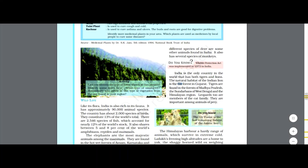Reading from the book: India is the only country in the world that has both tigers and lions. The natural habitat of the Indian lion is the Gir forest in Gujarat, and tigers are found in the forests of Madhya Pradesh, Sundarbans of West Bengal, and the Himalayan region. Leopards too are members of the cat family and are important among animals of prey.